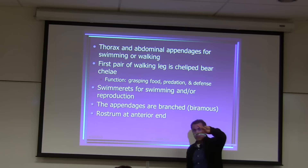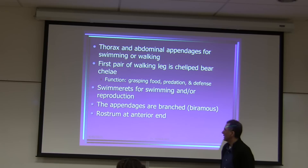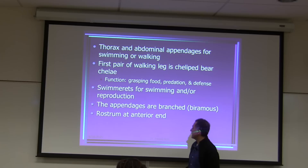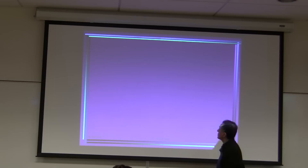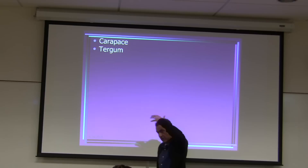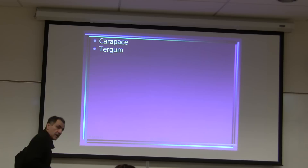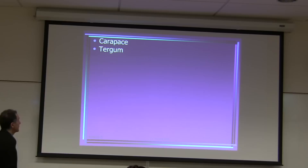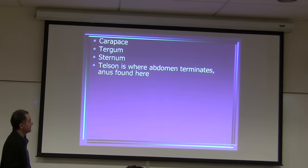The appendages — meaning the swimmerets and the legs — are branched. The rostrum is at the front of the animal, the anterior end. The uropod is also called the tail fan. The carapace is the exoskeleton that covers the cephalothorax. The tergum consists of segments on the dorsal portion of the animal — plates of exoskeleton. The sternum is on the ventral portion.